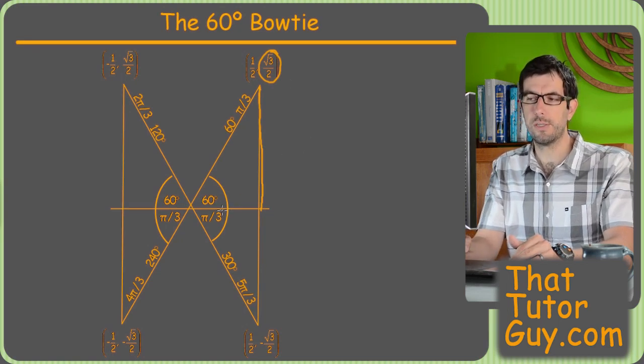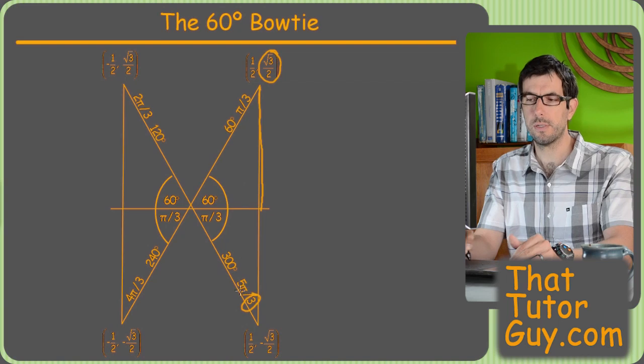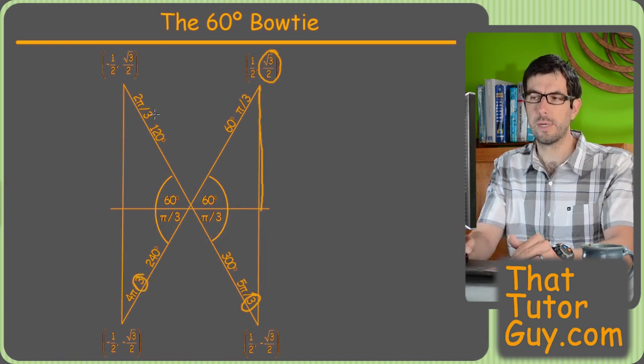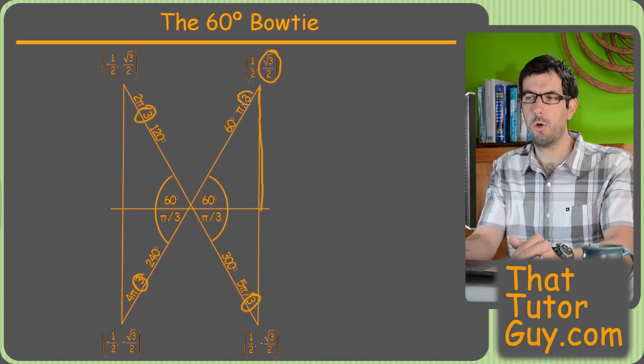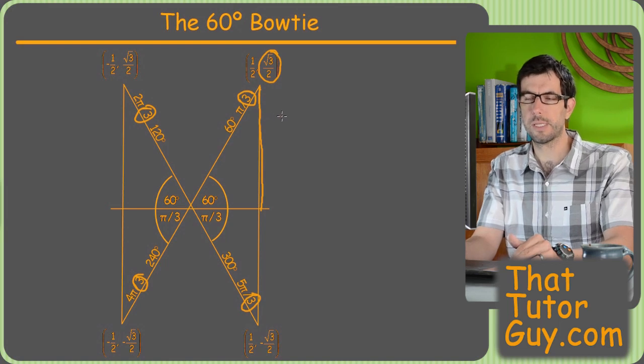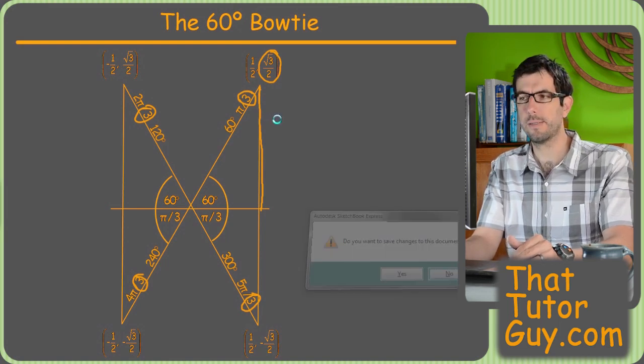And, of course, the denominators for all 60-degree reference angles, or all angles that have 60 degrees as their reference angle, are over 3. And that's just because 60 degrees is π over 3 in radians.